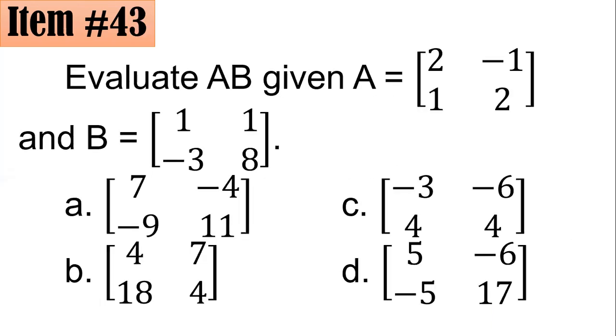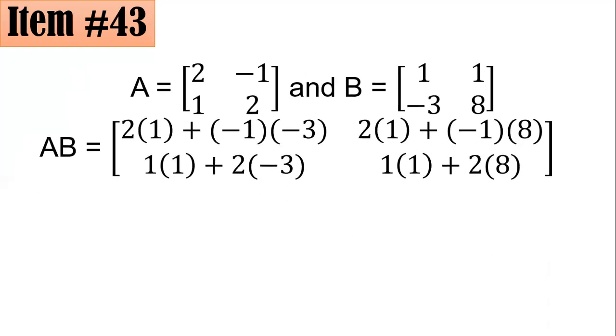Item 43. Evaluate AB given that A is this matrix and B is - A is 2 negative 1, 1, 2. B is 1, 1 negative 3, 8. For this one, we will be looking for the product. Remember that multiplication of square matrices in general is not commutative. We will multiply the first row with the first column of B, the first row of A with the first column of B. So 2 times 1 plus negative 1 times negative 3.